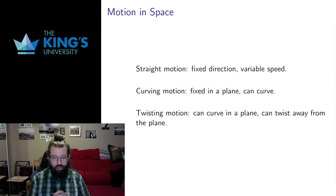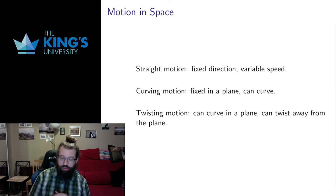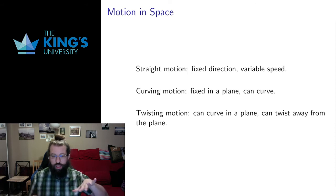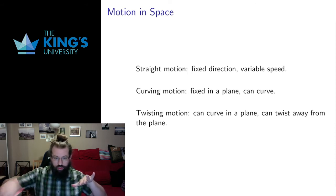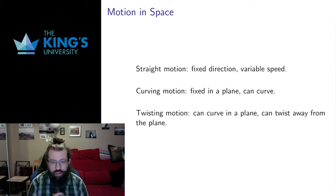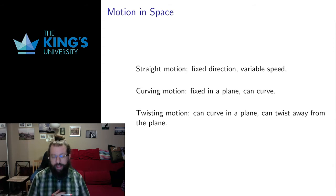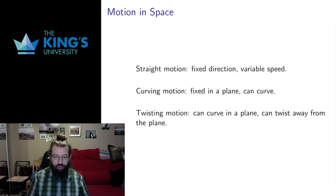I'm trying to describe essentially three kinds of motion. I can have straight motion — motion in a straight line — with a fixed direction and variable speed. I can also have curving motion where I fix a plane of motion but in that plane I can curve around. Think about orbits that stay in a certain plane but have a curved path. And I can also think of twisting motion, where I can curve in a plane but also twist to change the plane I'm curving in, and in that way reach any point in three-dimensional space.